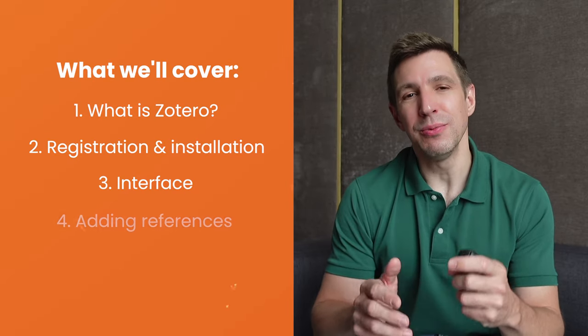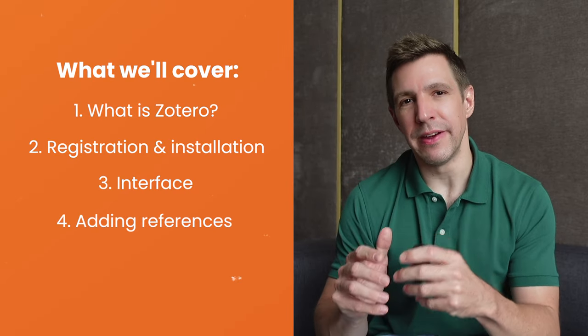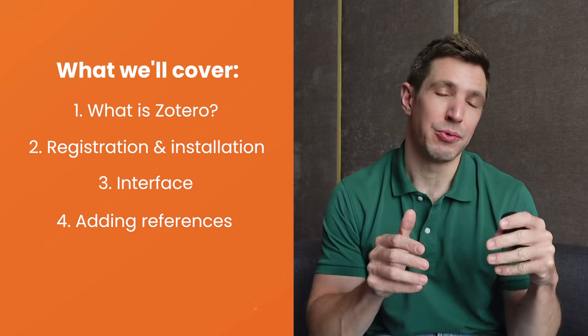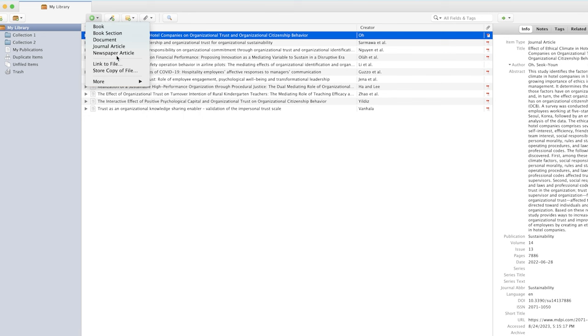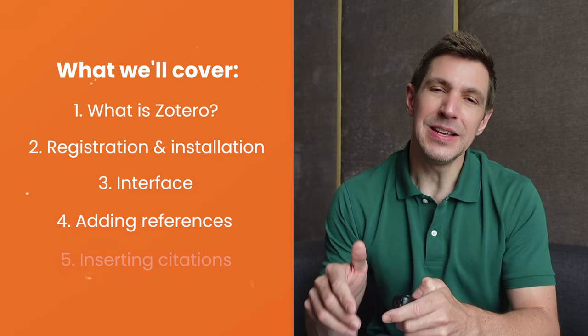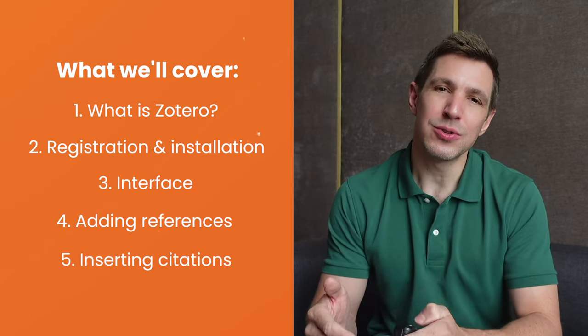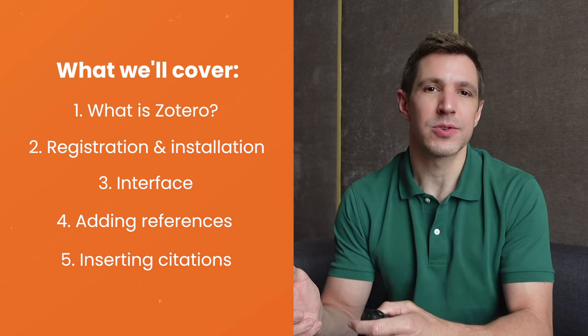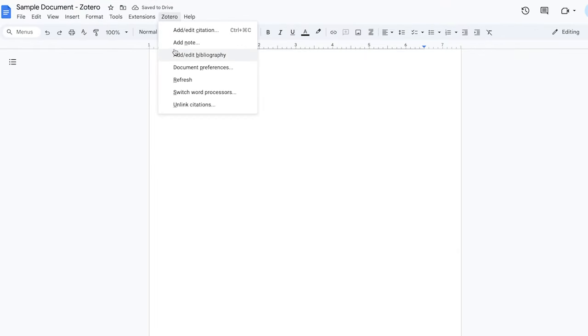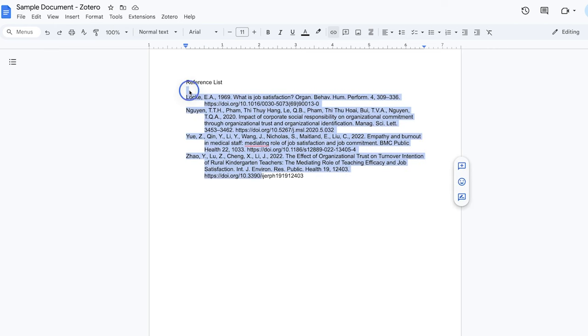Once we've laid that foundation we'll look at the various ways in which you can add resources to Zotero and then manage your reference library like a pro. Last but not least we'll look at how to use Zotero within a word processor such as Google Docs or Microsoft Word to make inserting your citations and building your reference list super simple. If you'd prefer to skip past any of these sections you can find the timestamps in the description.